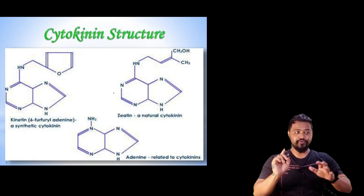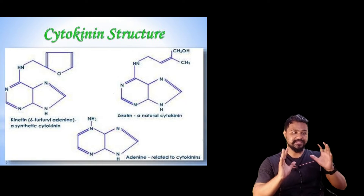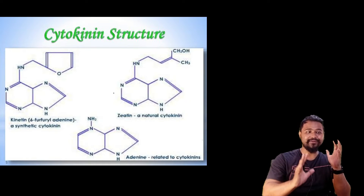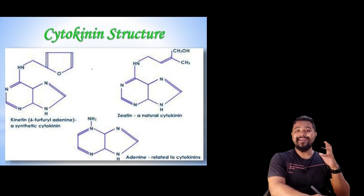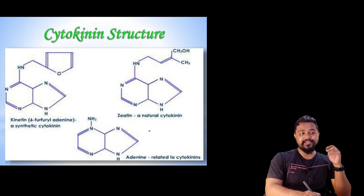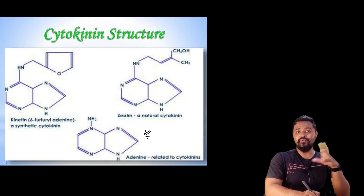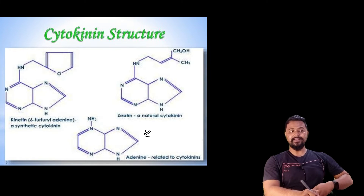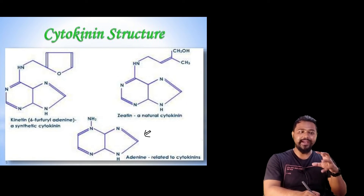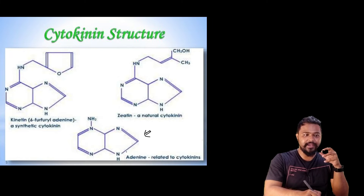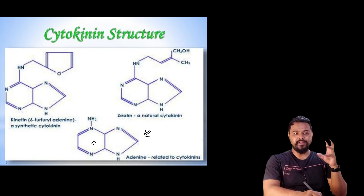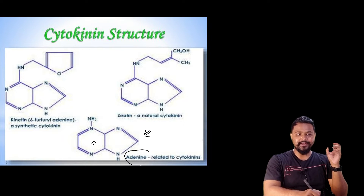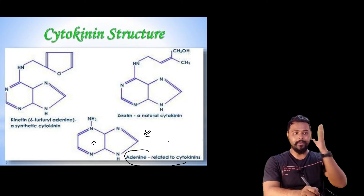This slide shows the cytokinin chemical structure. The cytokinin structure is an adenine derivative, related to tRNA. This is the benzene ring — a 6-carbon compound and 5-carbon compound — and the adenine base is related to the cytokinin structure.